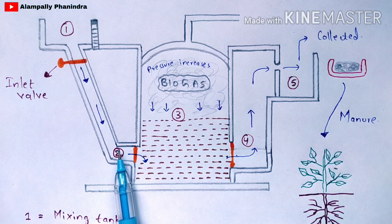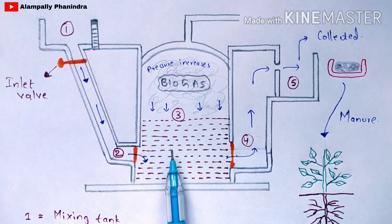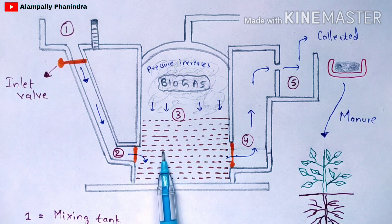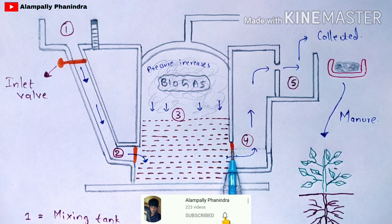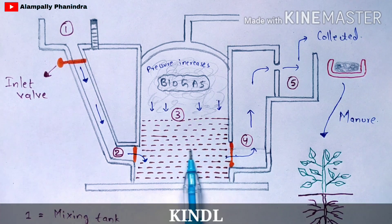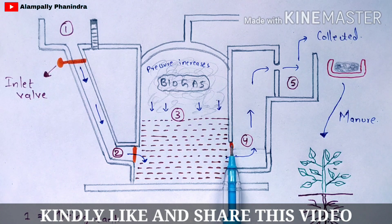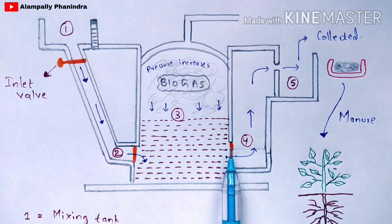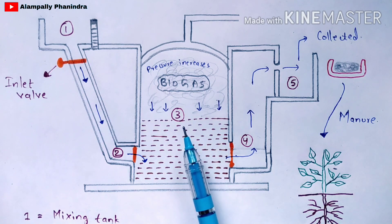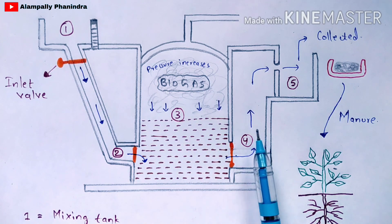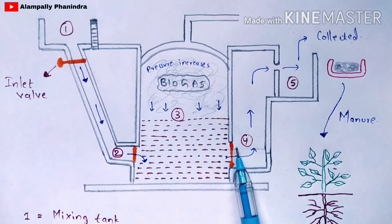The mixture from the inlet chamber enters the digester tank. Once the digester tank begins to fill, an important step is to close the third valve — the digester tank valve — which acts as a mediator between the digester tank and the outlet chamber. Closing this valve prevents the slurry from passing from the digester tank into the outlet chamber.